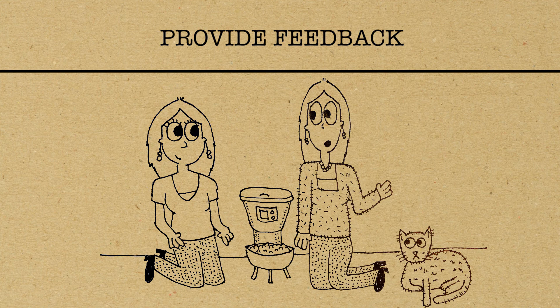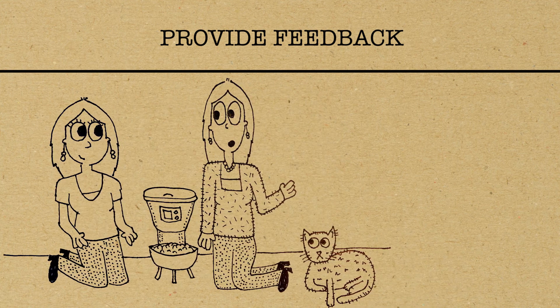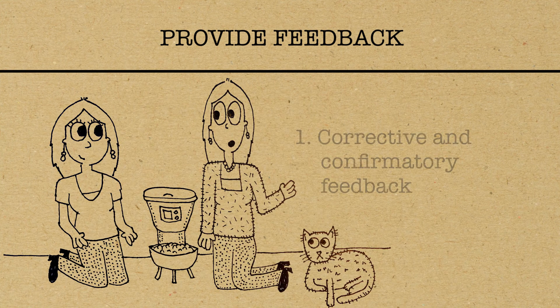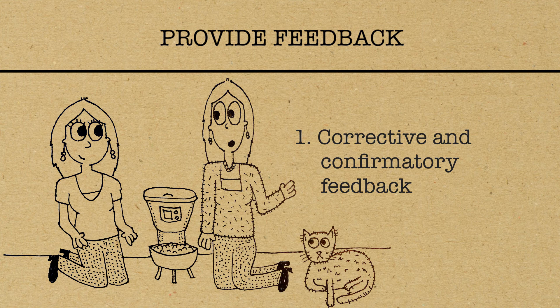There are different categories of feedback. First there's good old corrective and confirmatory feedback. This would be saying, "Hey, you did it," or "Wrong, do it again."